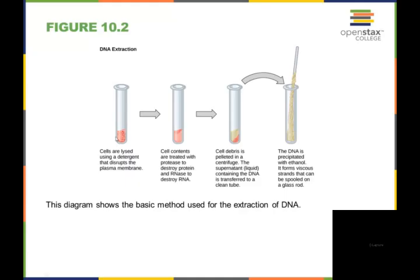They get lysed in a detergent that helps to disrupt the plasma membrane. The plasma membrane will fall apart and the contents are going to be treated with a protease enzyme that will destroy protein and RNases to destroy the RNA. What you'll be left with are cell debris that can be pelleted in a centrifuge.